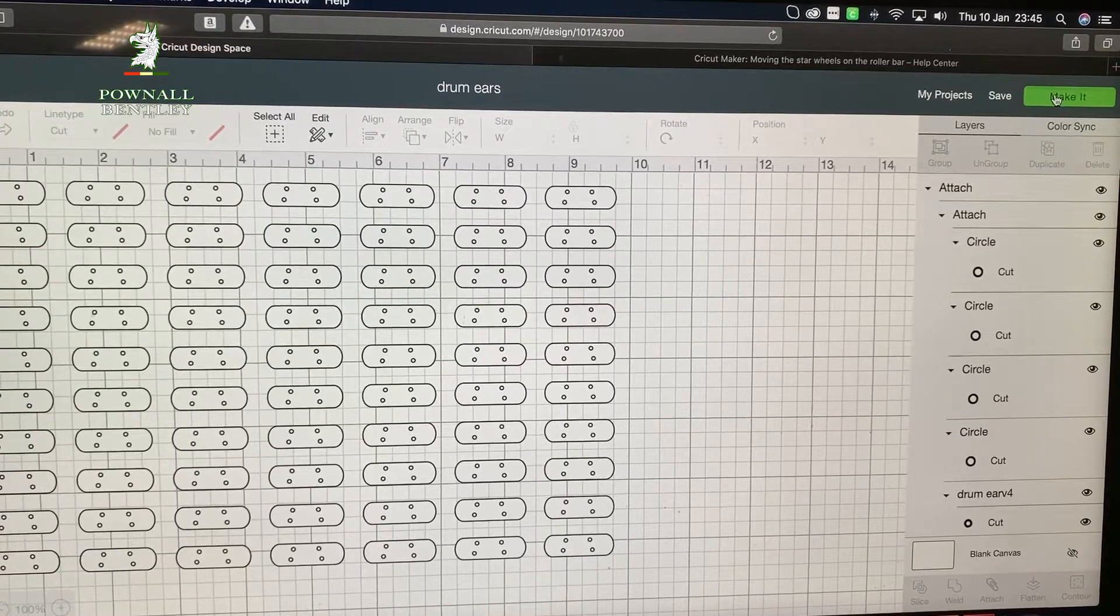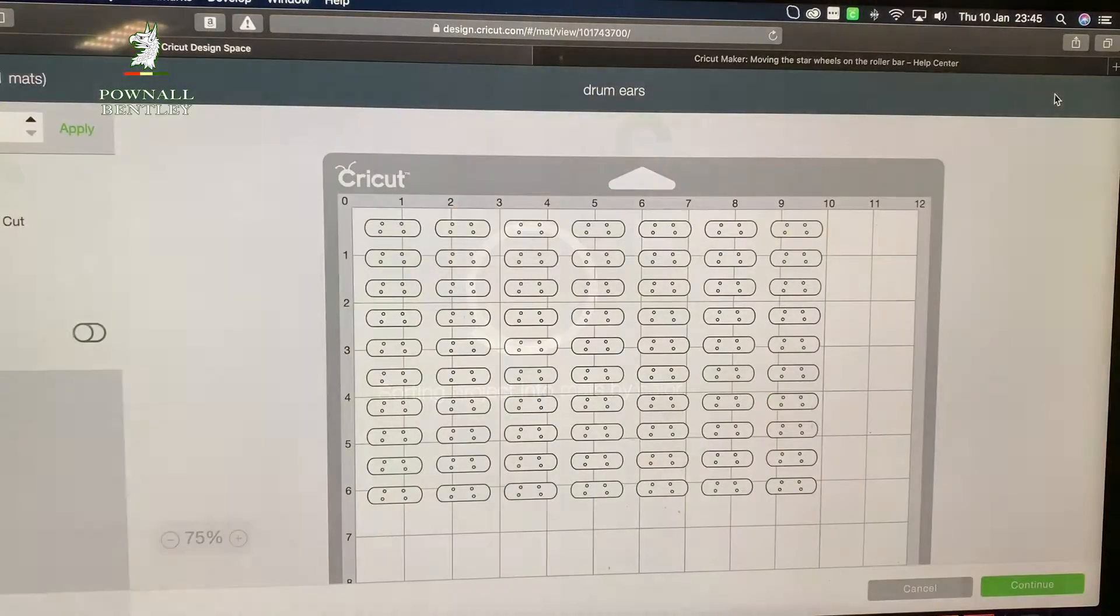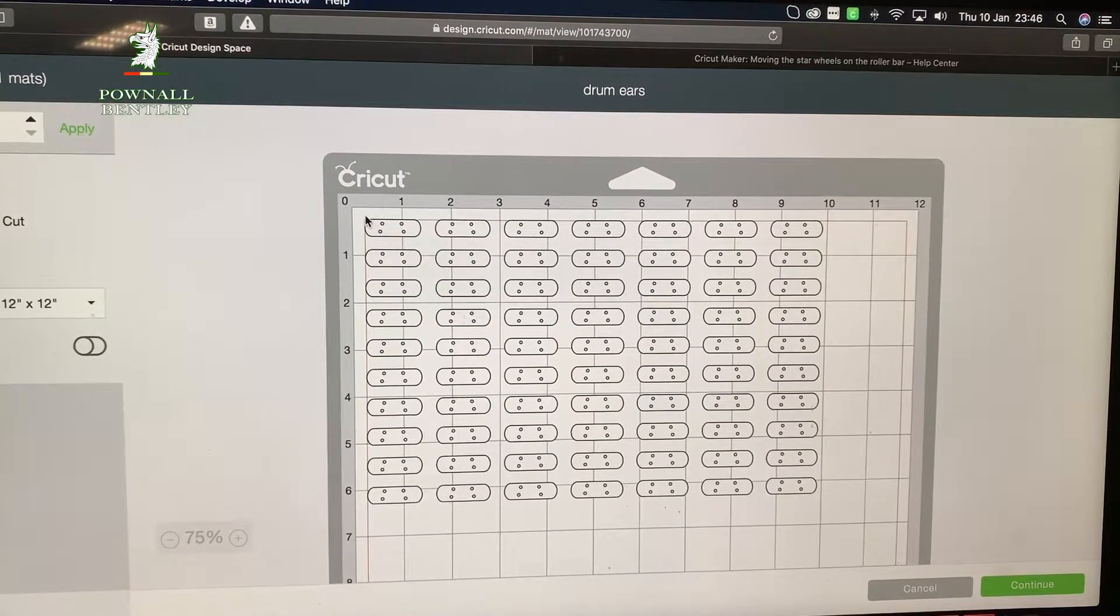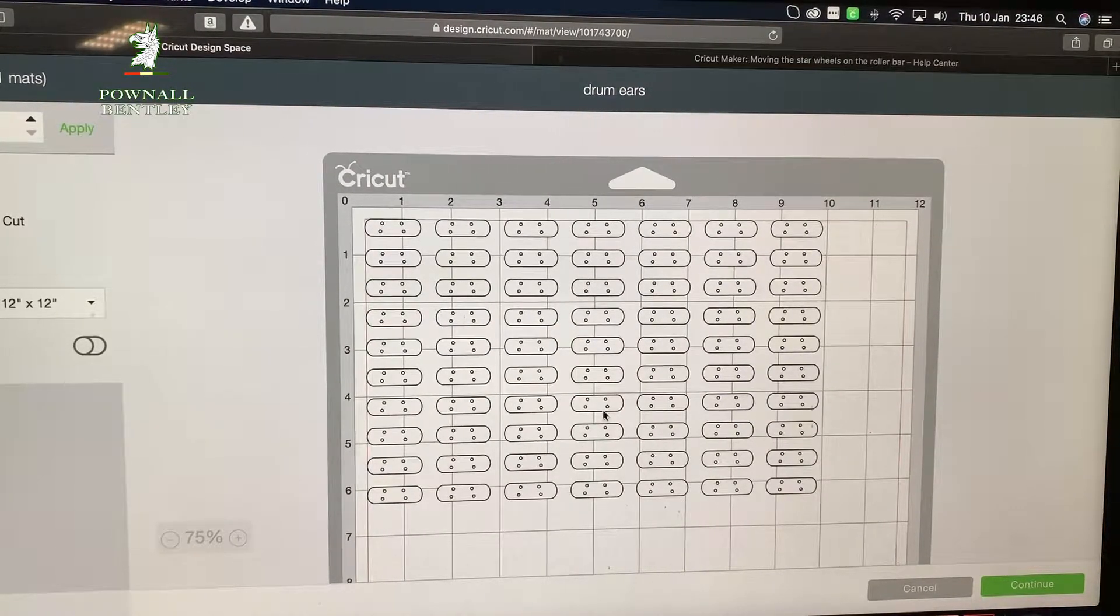What I'm going to do now is click make it. So that shows us how it's going to appear on the mat. I always just check I've got the right top left and I've got enough space on the bottom. That's actually fine.